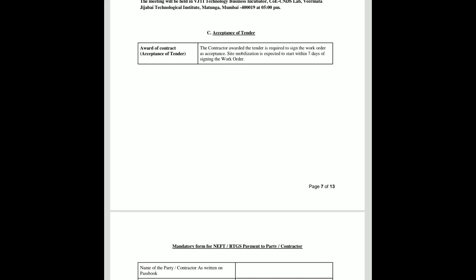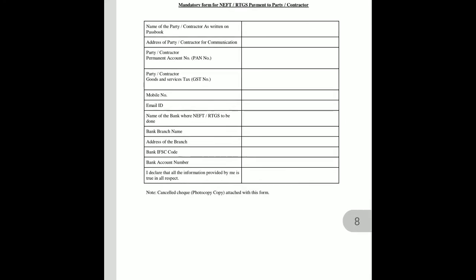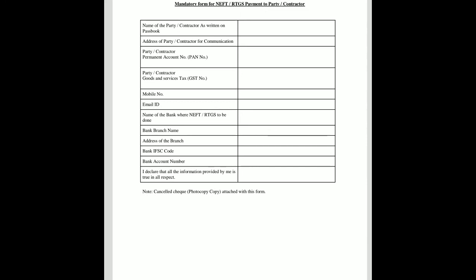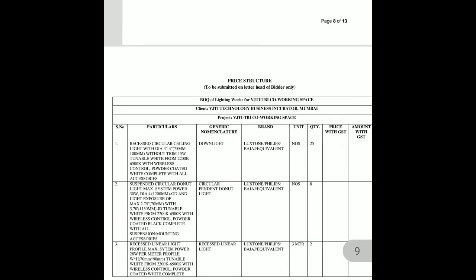For acceptance of the tender or award of the contract: the contractor is required to sign the work order, and site mobilization must start within 7 days of signing. A mandatory form must be filled for NEFT/RTGS payment to the parties. This form includes the name of parties, address, payment details, contractor PAN number, contractor GST number, mobile number, and email address.